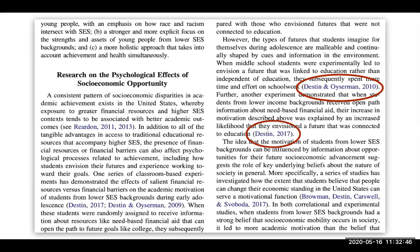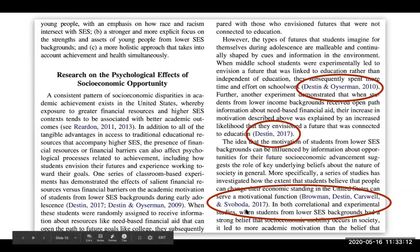Here is another in-text citation: Destin, comma, 2017. Again, Destin is the author, and 2017 is the year for this particular resource. And here is one more. In this in-text citation, we can see that this resource has several authors: Broman, Destin, Carswell, and Sabota, followed by a comma and the year, all wrapped in parentheses.